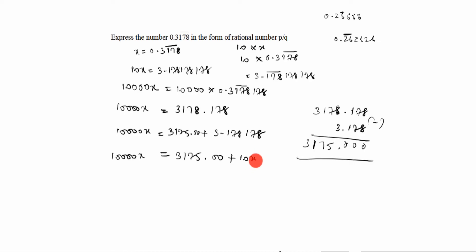You see, x should come on one side. The number should go on one side. The x should come on one side. Already I taught in the last class you have to write for the video. 10,000x minus 10x equal to 3175.